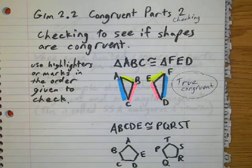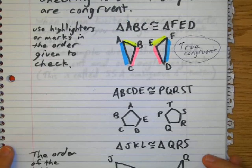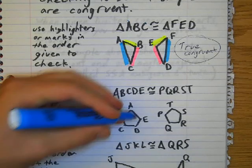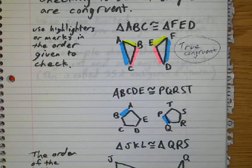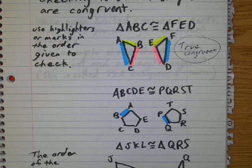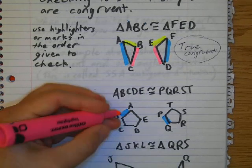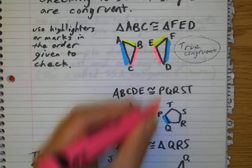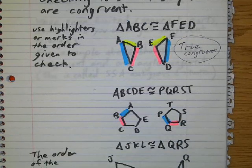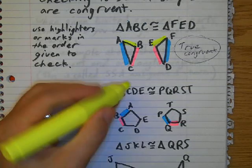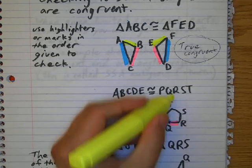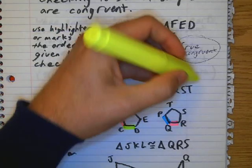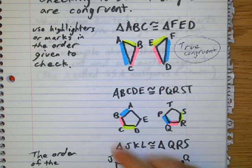Let's look at the next one. ABCDE is congruent to PQRST. AB is congruent to PQ. BC is congruent to QR. CD is congruent to RS.